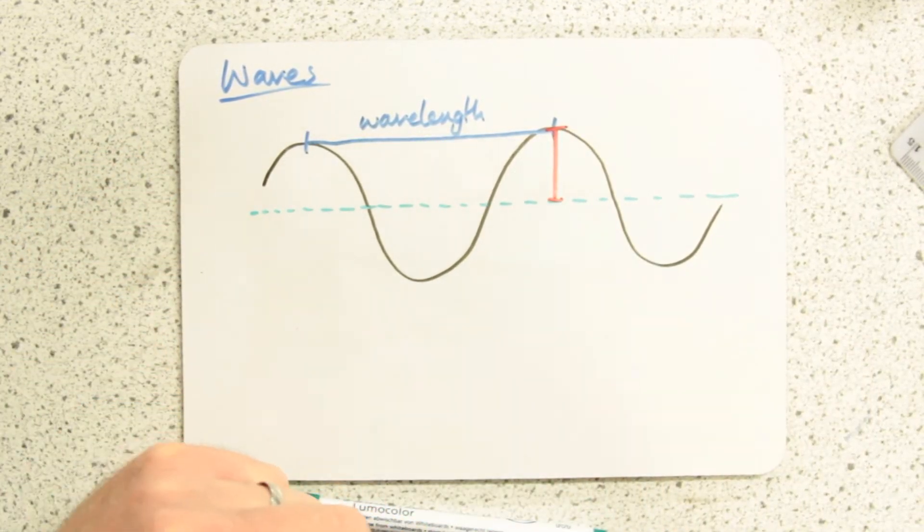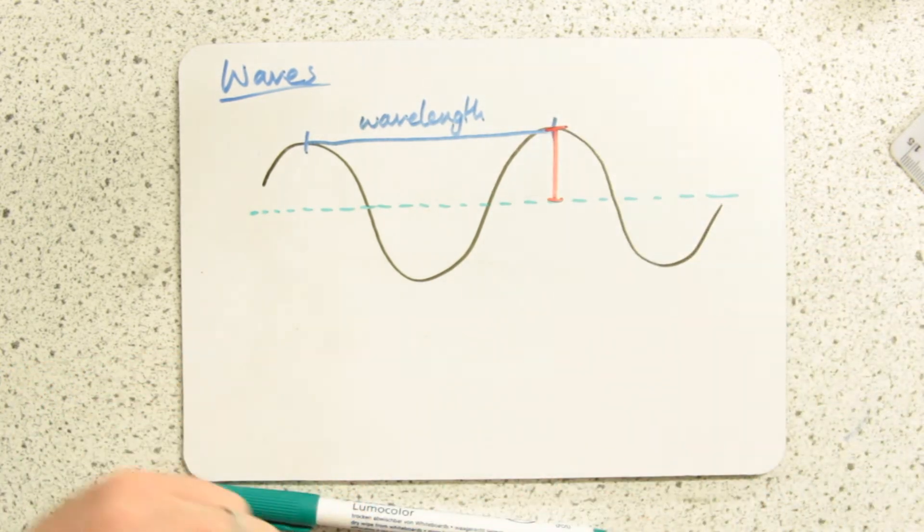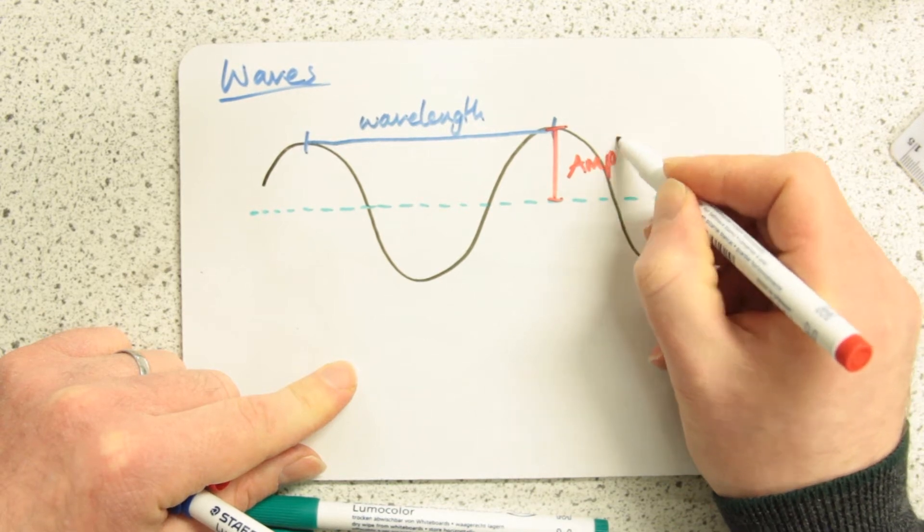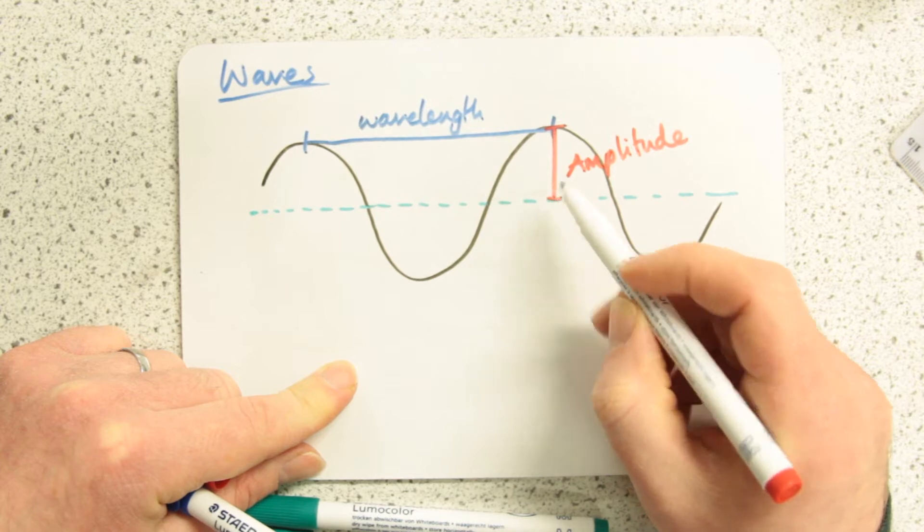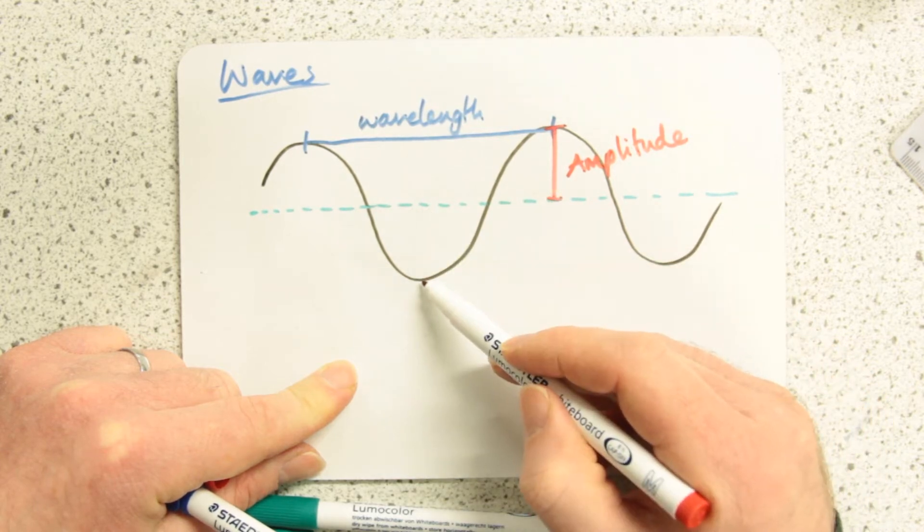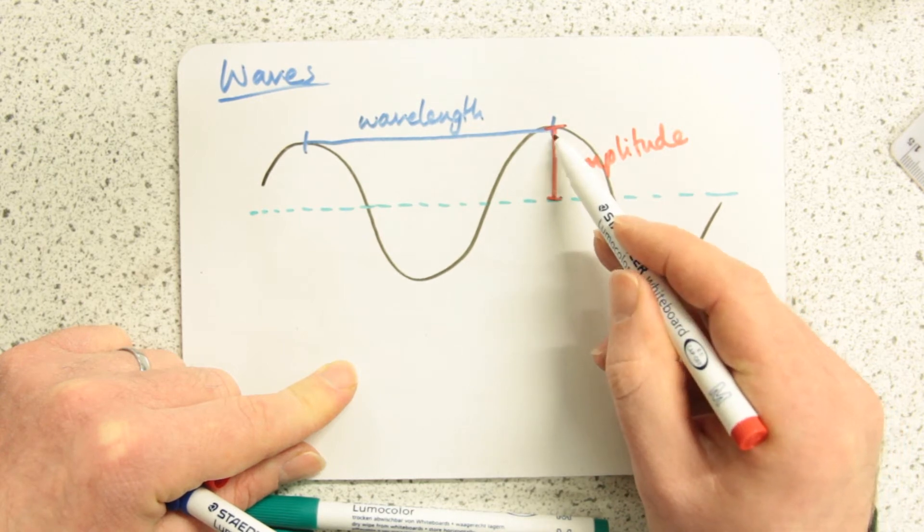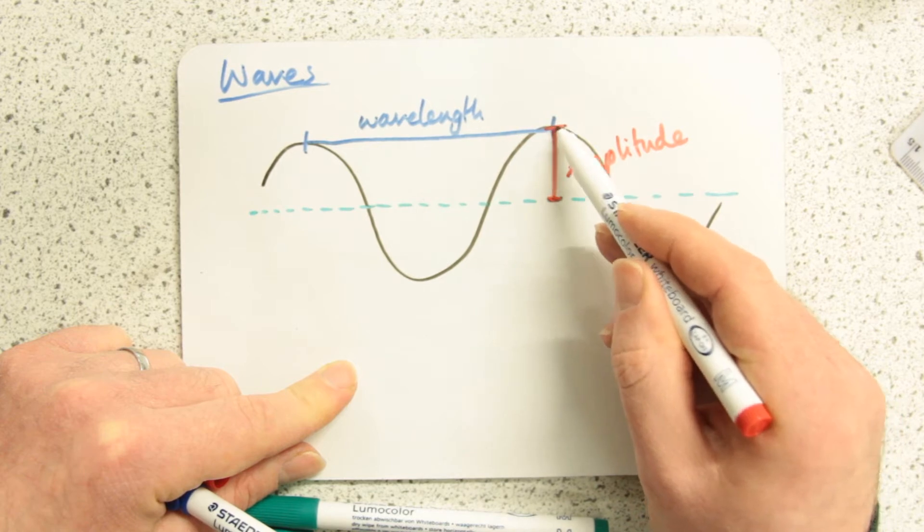It's the height of the wave but it is not the full height from peak to trough. It is only from the equilibrium position to the peak. You can draw it from equilibrium position to trough, down here. Again, make sure you go right from one to the other. Not an arrow which kind of points somewhere around here. Exactly from here to here.